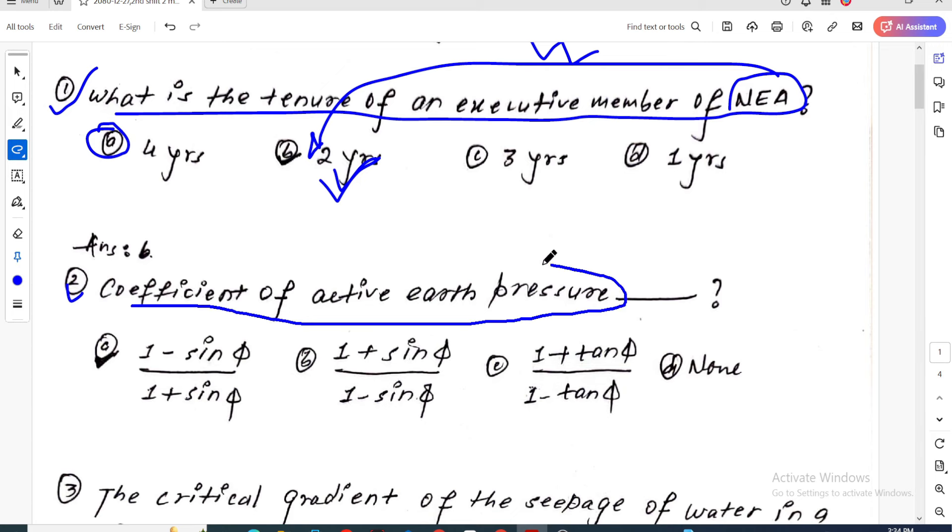Question two is about coefficient of active earth pressure. This is a very common question already mentioned in my chapter. The formula is 1 minus sin φ divided by 1 plus sin φ for active earth pressure, and the opposite for passive case.